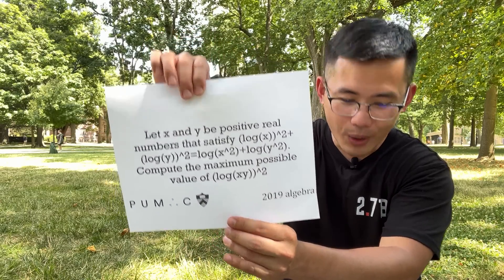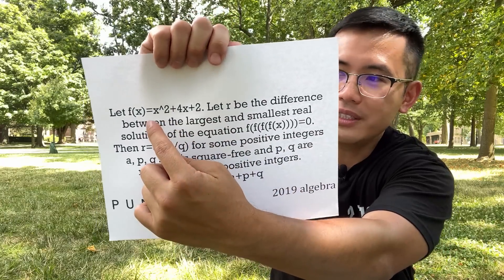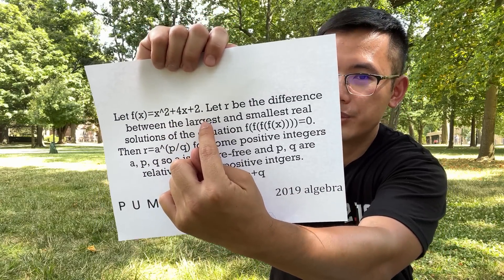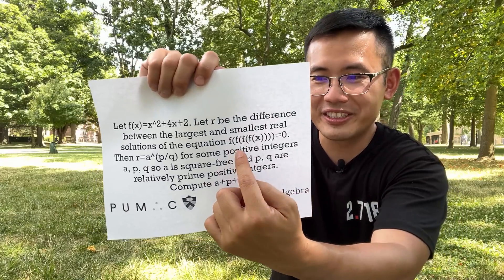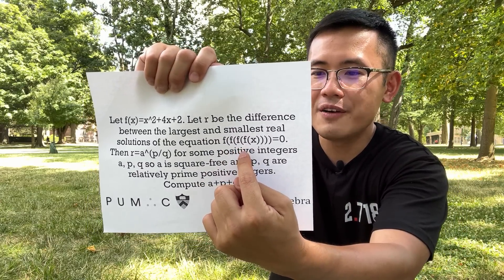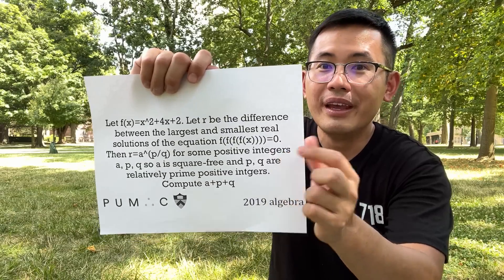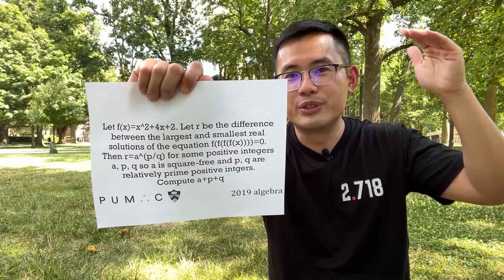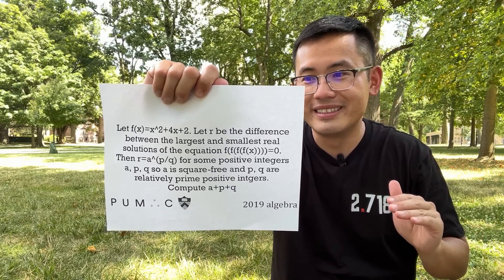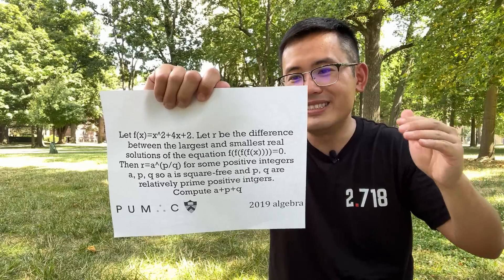Okay, I have another question and I love this one a lot. First, we have a quadratic function f(x) = x squared plus 4x plus 2, and then we have the equation f(f(f(f(x)))) = 0. When you solve this equation, we are going to find the biggest real solution and also the smallest real solution.